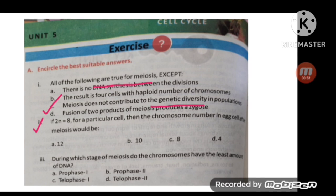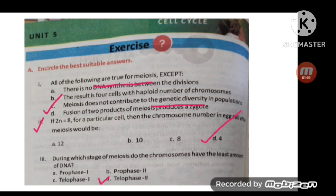MCQ number three: during which stage of meiosis do chromosomes have the least amount of DNA? The correct option is telophase two.